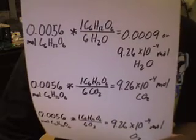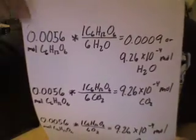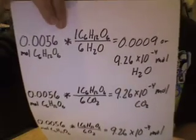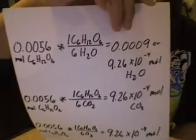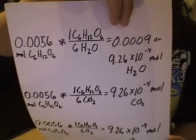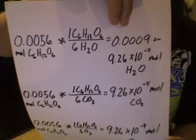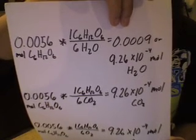We multiply the given amount of moles of glucose, the limiting reactant, use molar ratio to find how much products of H2O is yielded. In this case, it is 9.26 times 10 to the negative 4 moles of H2O.